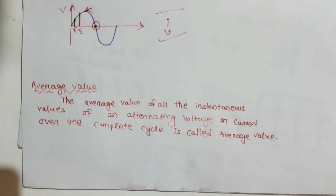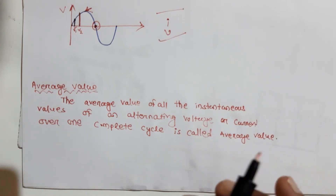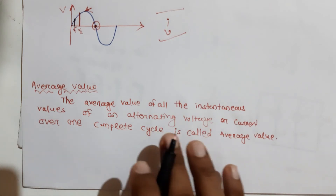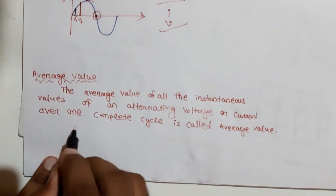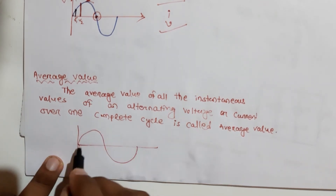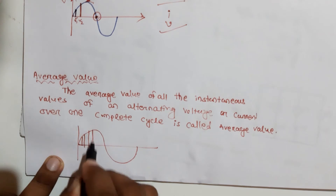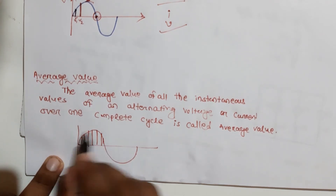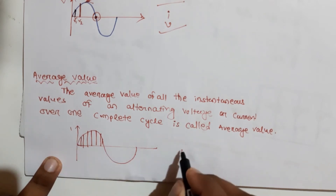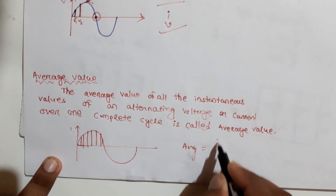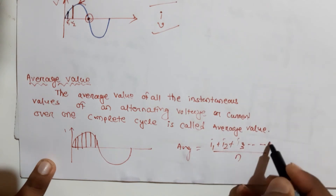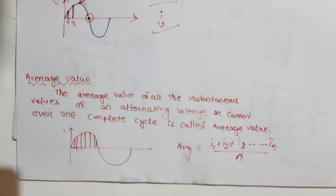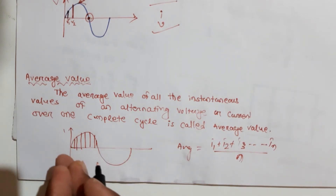Next we go to average value. The average value of all instantaneous values of an alternating voltage or current over one complete cycle is called the average value. Consider an alternating current waveform — the average value is calculated as the sum of instantaneous values (i1 + i2 + i3 + ...) divided by the number of values.